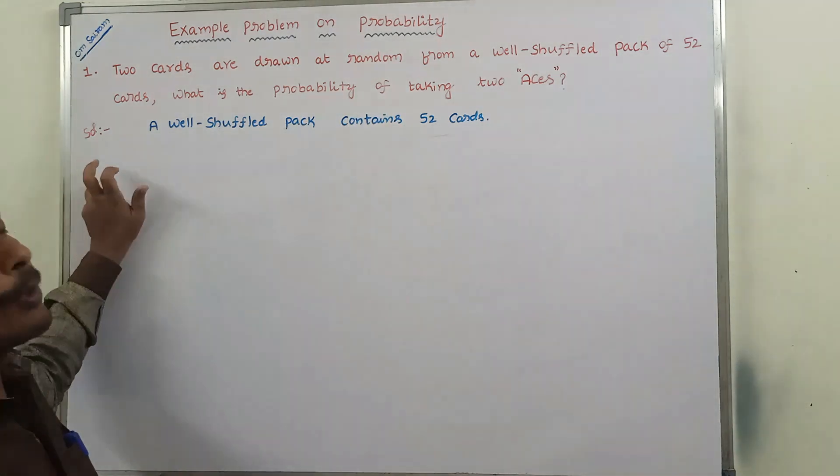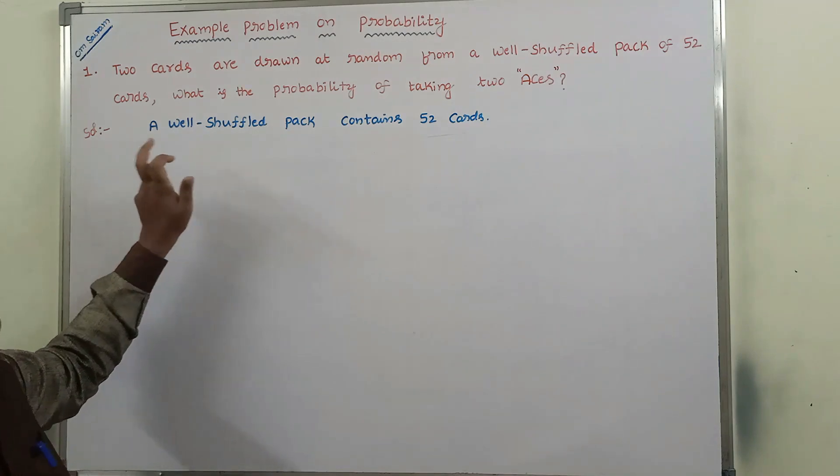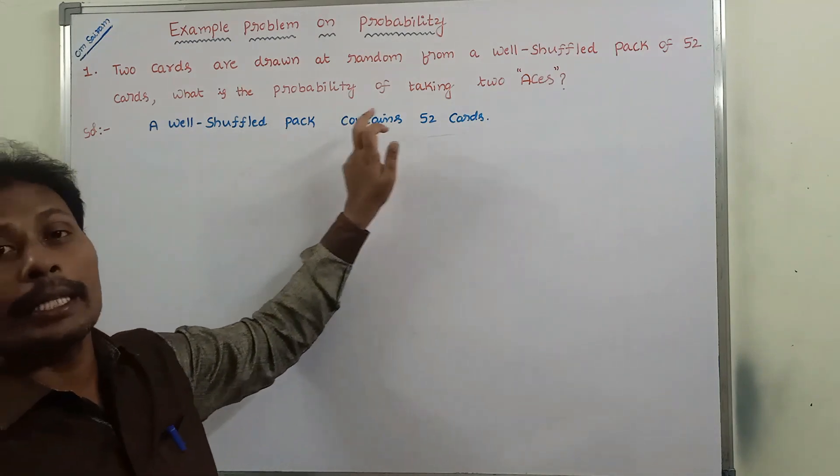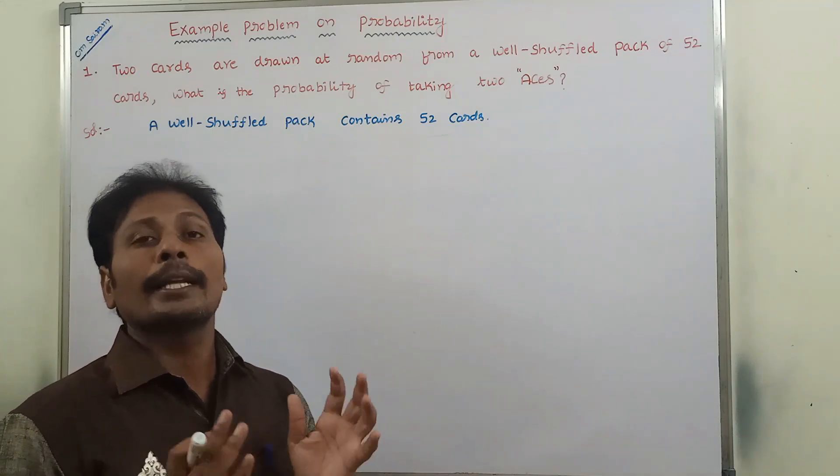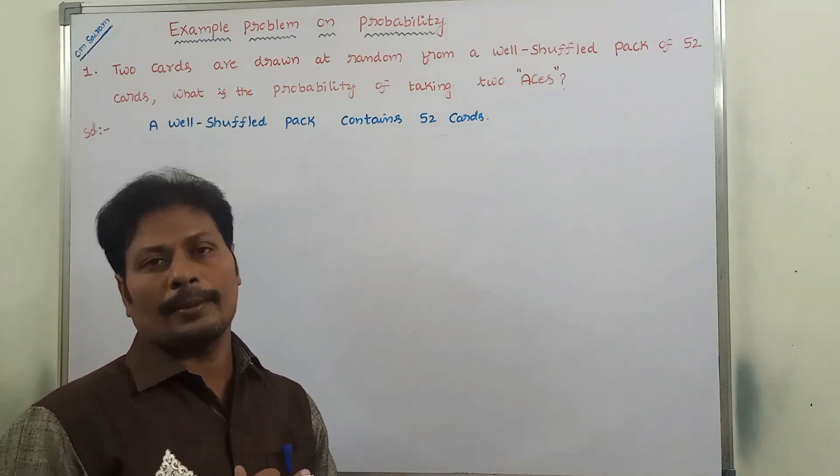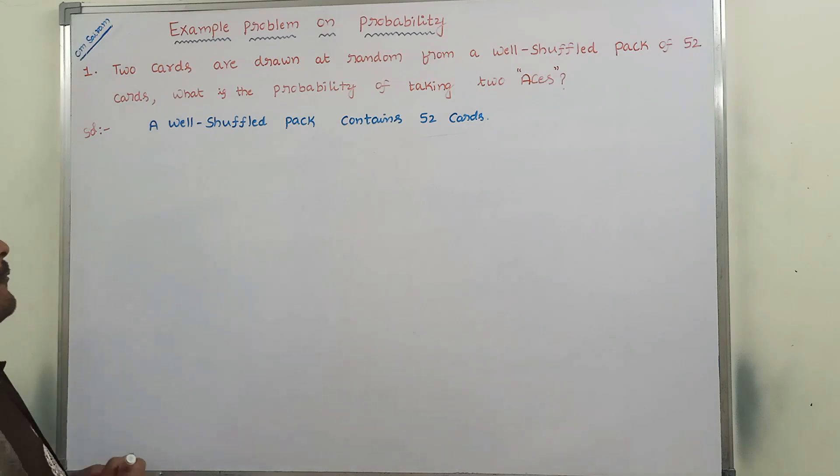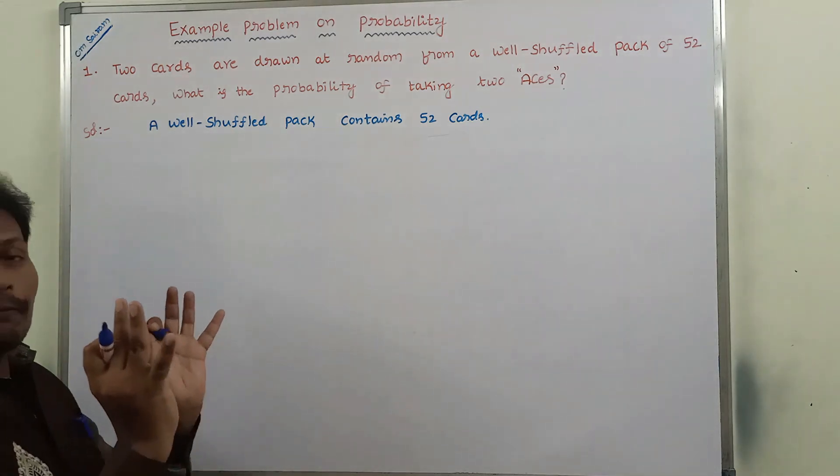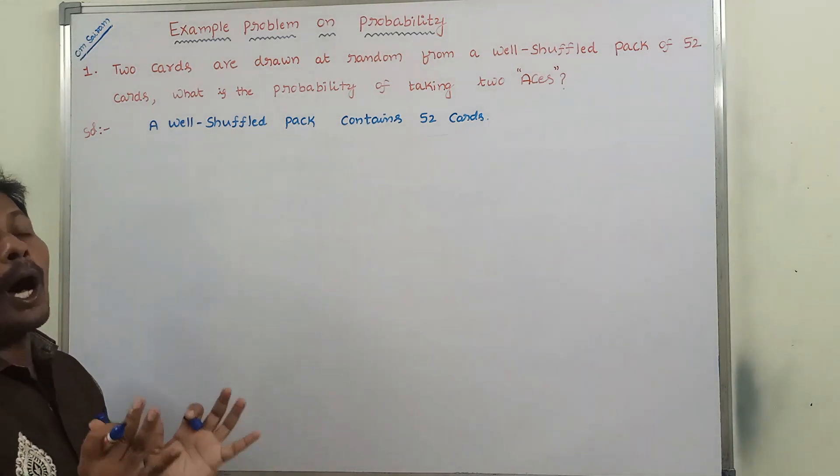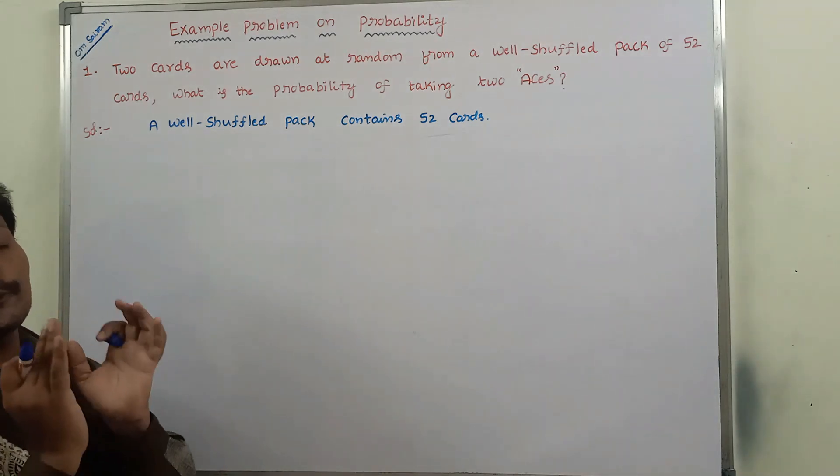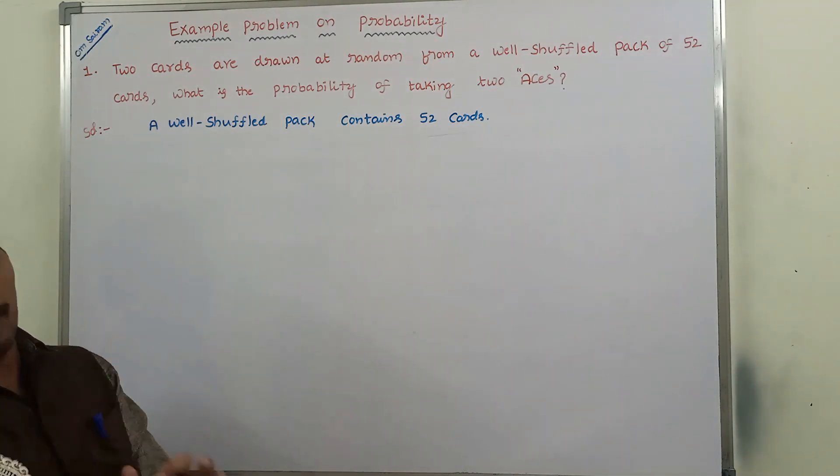The solution: a well-shuffled pack contains how many cards? There are 52 cards. From a pack of 52 cards, how to select two cards? 52 C 2 ways.